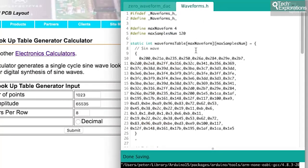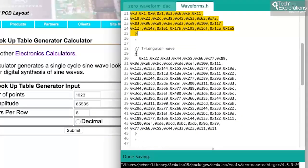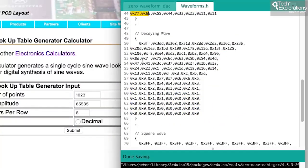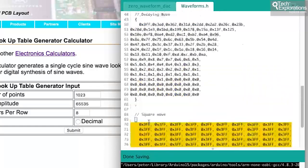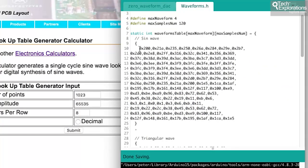I've got a waveforms table in this header file, in the second file that is part of this sketch, and you can see here that I've got a table that contains three rows. The first one is a sine wave, the second one is a triangular wave, and then the third one is a decaying wave, and I've got a square wave here as well. For the sine wave, for example, I've calculated those values. I've got 120 values per period for this sine wave. Of course, I didn't calculate those manually. I used an online calculator to do that.